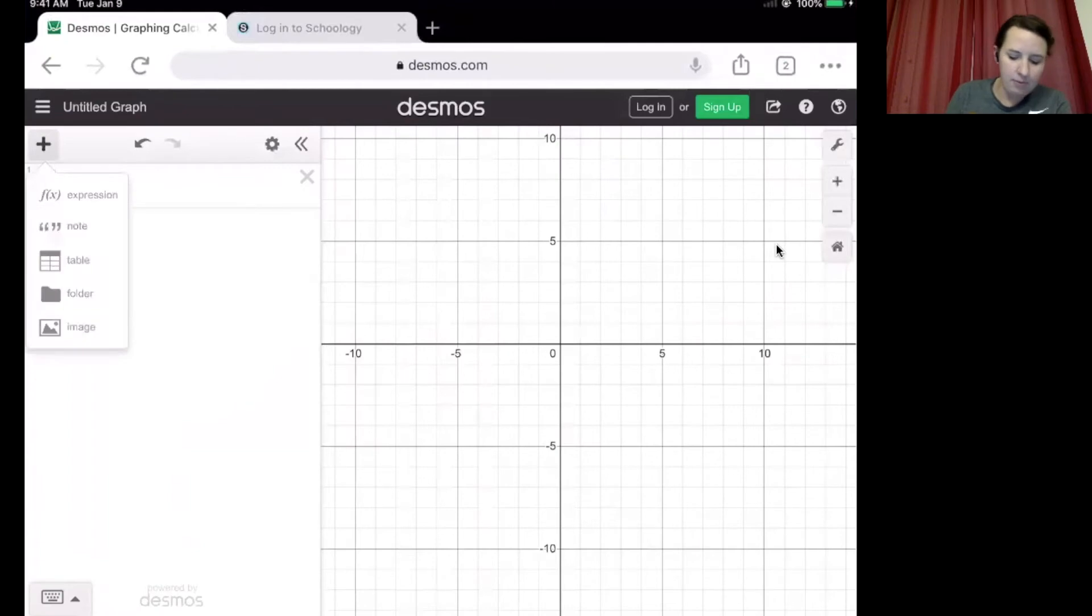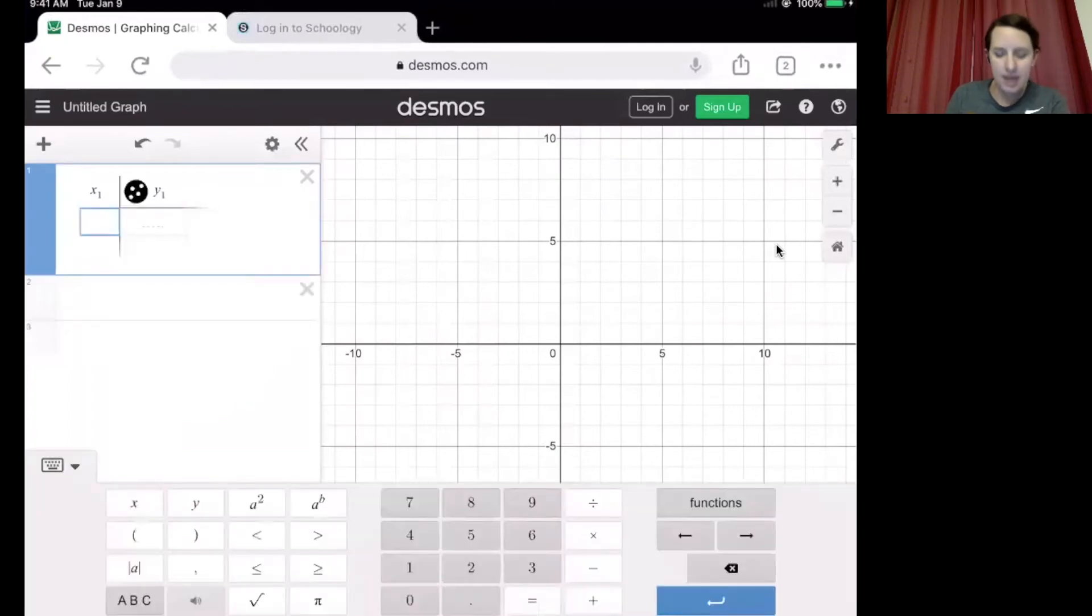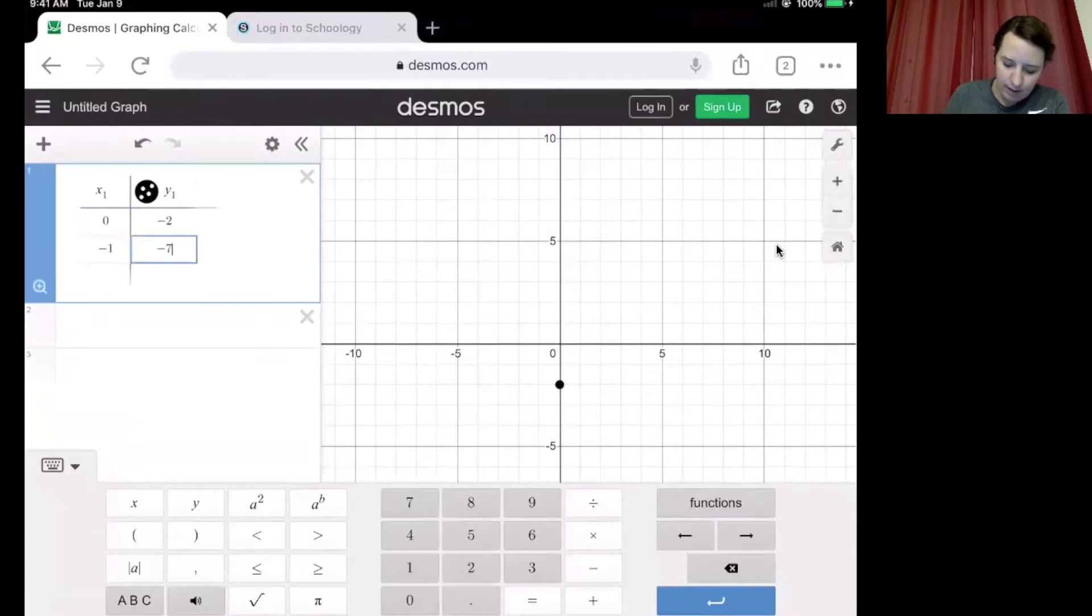In order to add a table, I'm going to click that plus sign and table. 0, -2, -1, -7, and 3, -11.